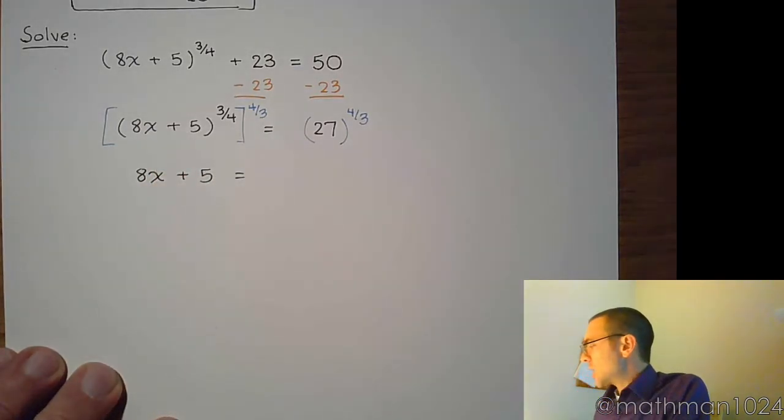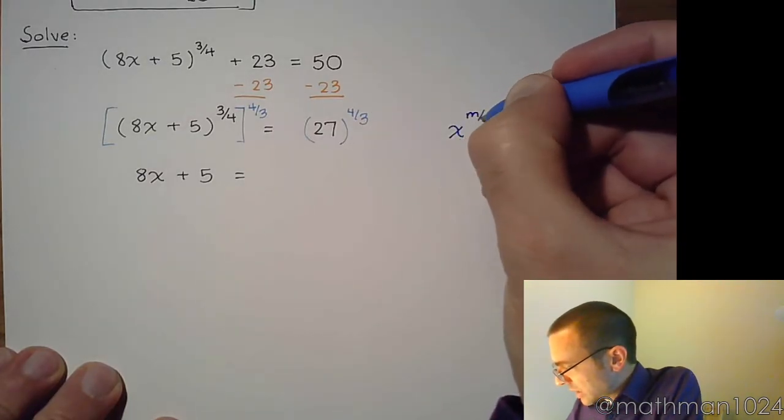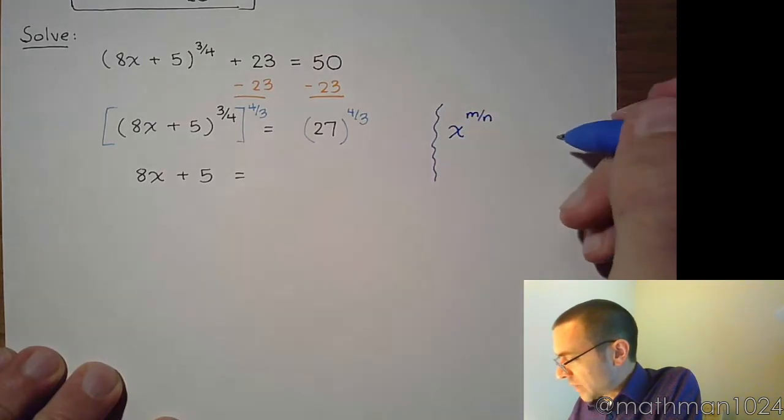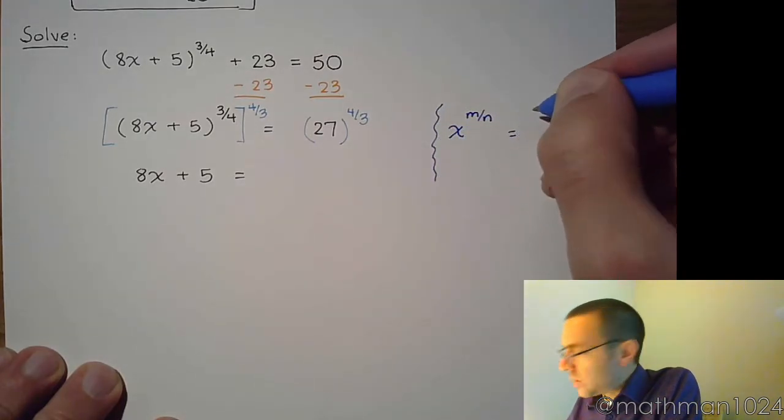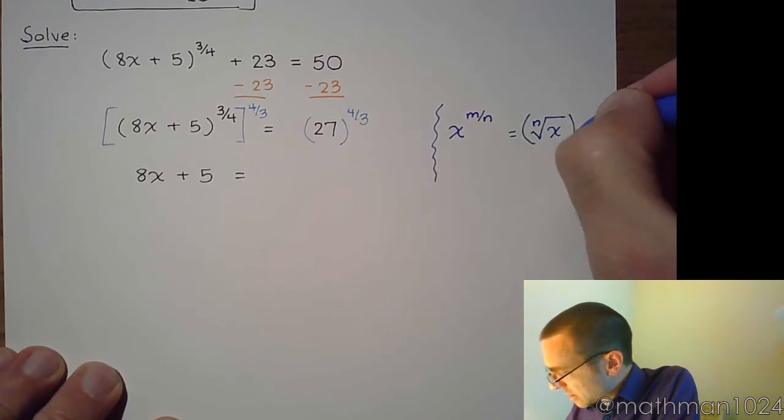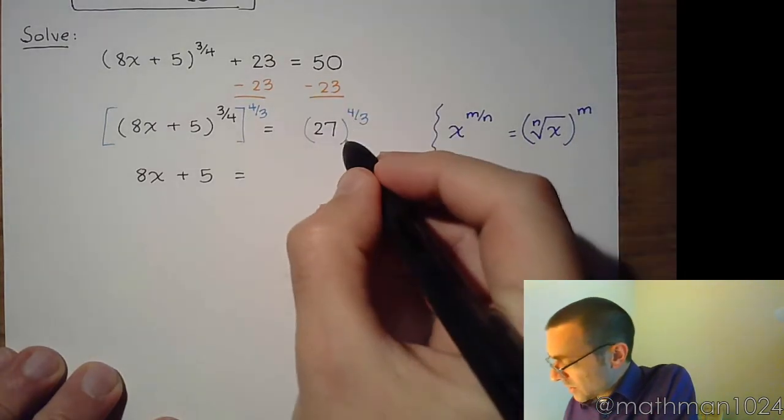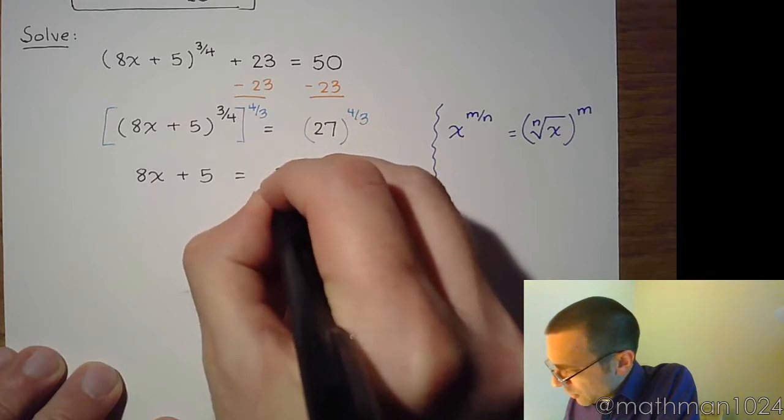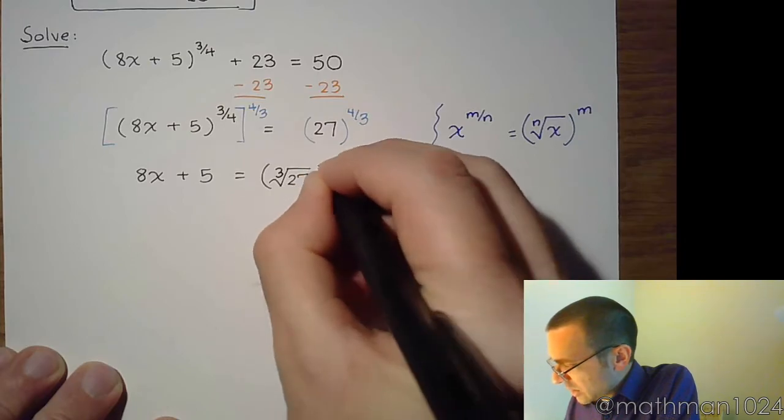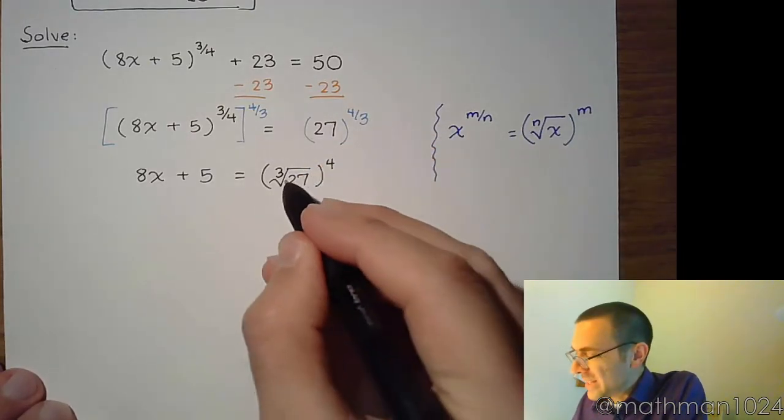On the right side, we need to remember this: that when you have an expression raised to a fractional power like m over n, that means that you are going to do the nth root of x and then raised to the mth power. That means this expression becomes the cube root of 27 raised to the fourth. The denominator of your power becomes the index of your radical.